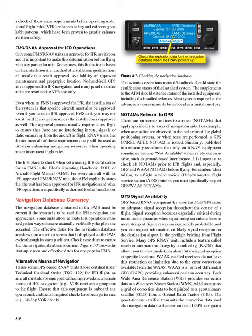Sometimes this limitation is based on the installation — i.e., method of installation, qualifications of installer, aircraft approval, availability of approved maintenance, and geographic location. No handheld GPS unit is approved for IFR navigation, and many panel-mounted units are restricted to VFR use only. Even when an FMS is approved for IFR, the installation of the system in that specific aircraft must also be approved. Even if you have an IFR-approved FMS unit, you may not use it for IFR navigation unless the installation is approved as well.